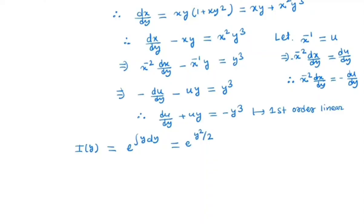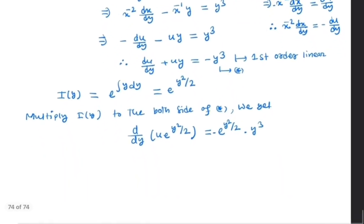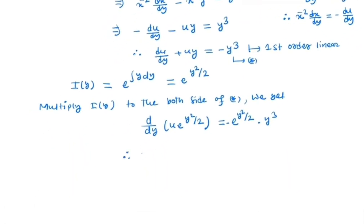In the next step we multiply I(y) to both sides of the equation. After multiplying and integrating, the left side gives u times e to the power y squared by 2, and the right side is minus the integral of y cubed times e to the power y squared by 2 dy.